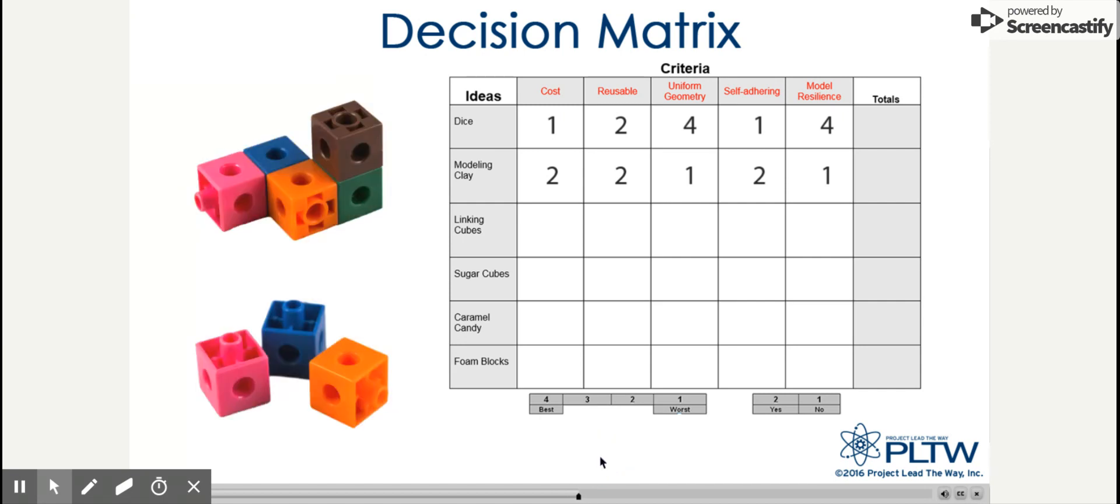The linking cubes are cheap, so we'll give that a 4 for their cost. They're somewhat reusable, so we'll give it a 2. They are precise geometry. They come as a cube, so we'll give that a 4. They can connect together with interlocking protrusions, so we'll give that a 2 for self-adhering. And they are pretty resilient, so we'll give that a 3.